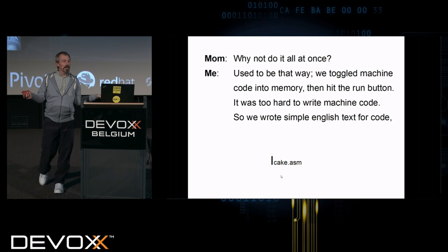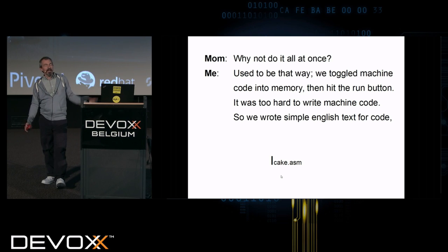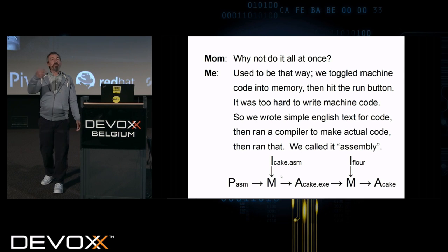But it was too hard to write machine code. So we wrote simple English text for the code, like my cake.assembly here. And then we ran a compiler to make the actual code, and then we ran that. And we called it assembly. So we have an assembler on my left, takes my cake.assembly, produces a cake.exe in machine code, which I can then run and actually get a cake out.